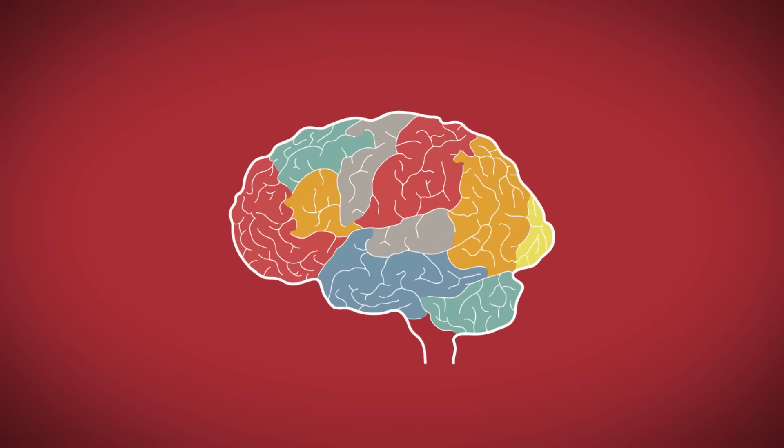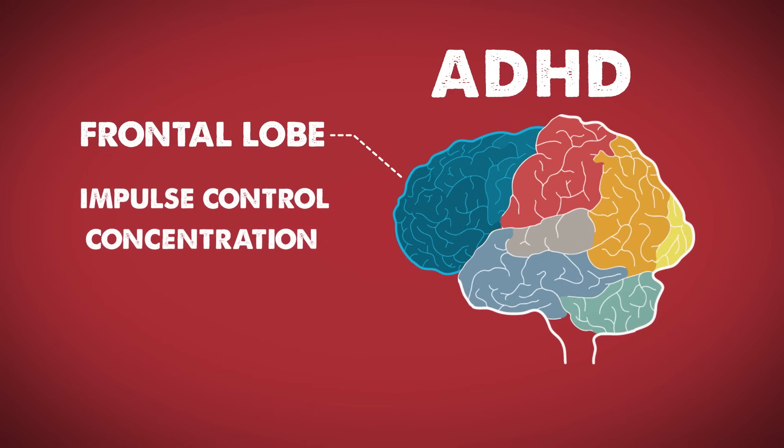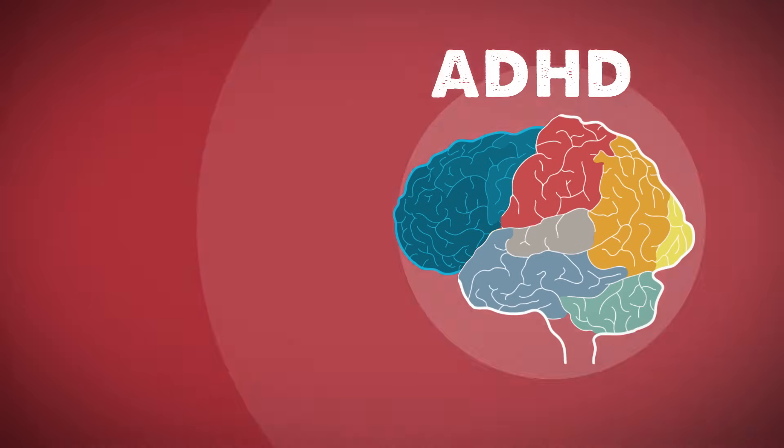Research has found that the brains of people with ADHD are smaller in certain areas, especially in the frontal lobe, affecting impulse control, concentration, and inhibition. Brain development is also slower in people with ADHD.